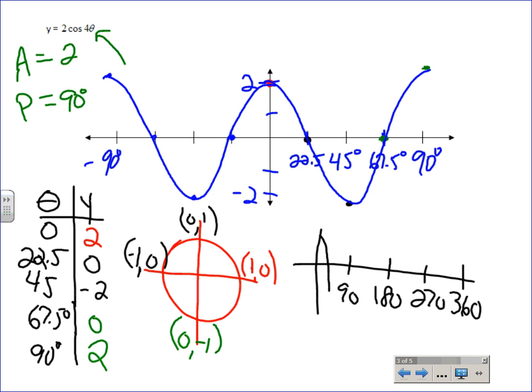So, remember, it would go... That's what it would look like if you went from zero to 360. How many times did it happen? Four.